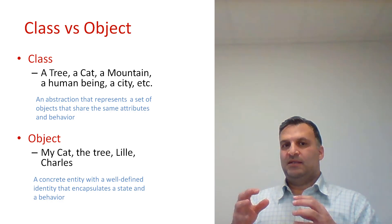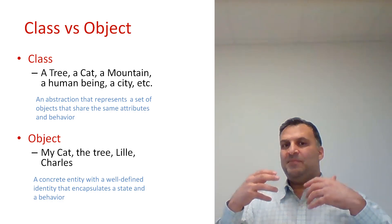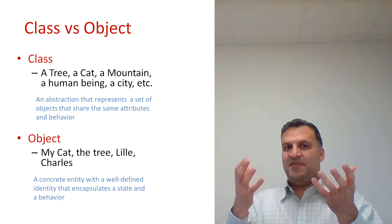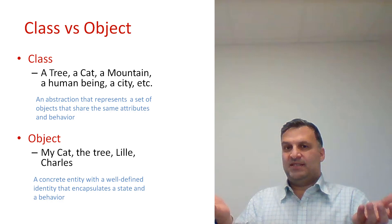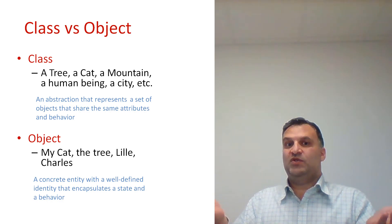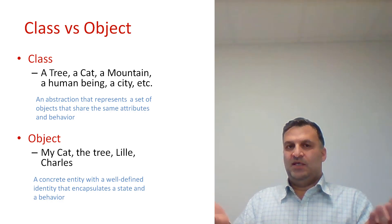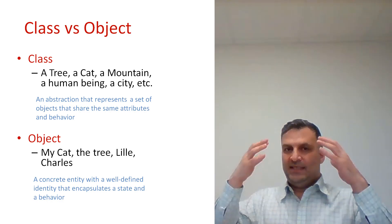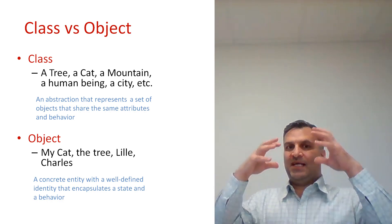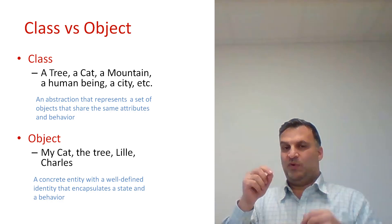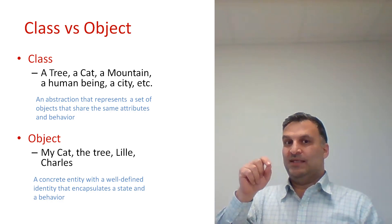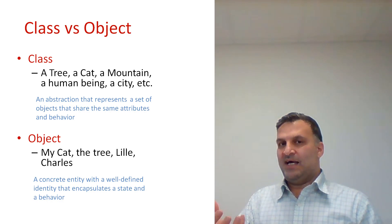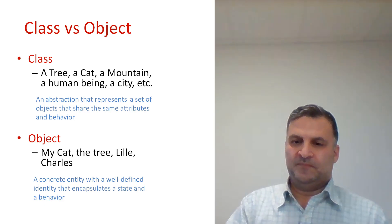We create an abstract object from the real objects that we saw during our life. A tree is an abstraction, but when we talk about a specific tree, it is a real entity.